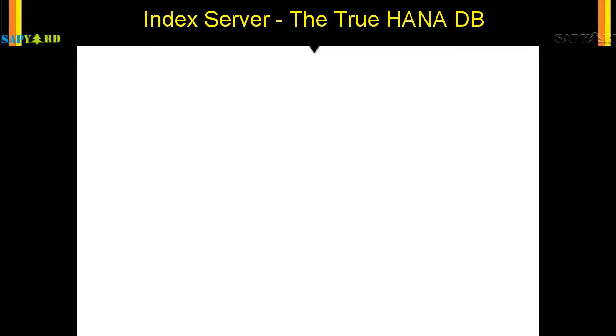What happens when a request comes from any tools that connect to SAP HANA? The tools can be client-side tools like Eclipse or HANA Studio. It can be analytical tools like Crystal Reports or Excel. It can be browsers like WebID. It can be migration tools, BusinessObjects, or application servers — the ABAP servers or the BW servers. So what happens when a request comes from any of these tools to SAP HANA?